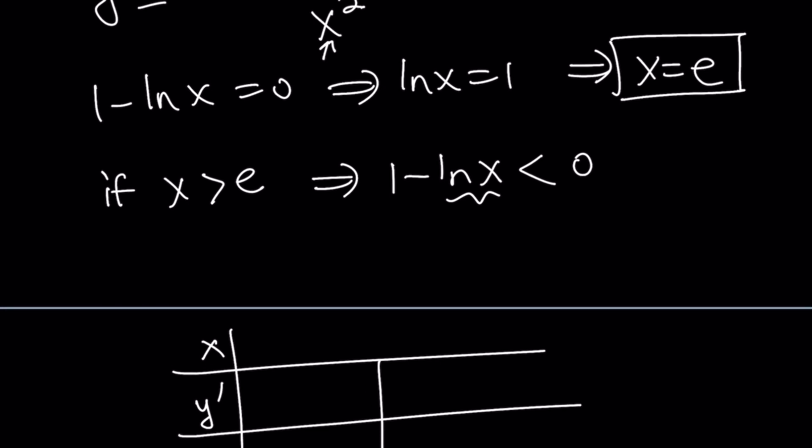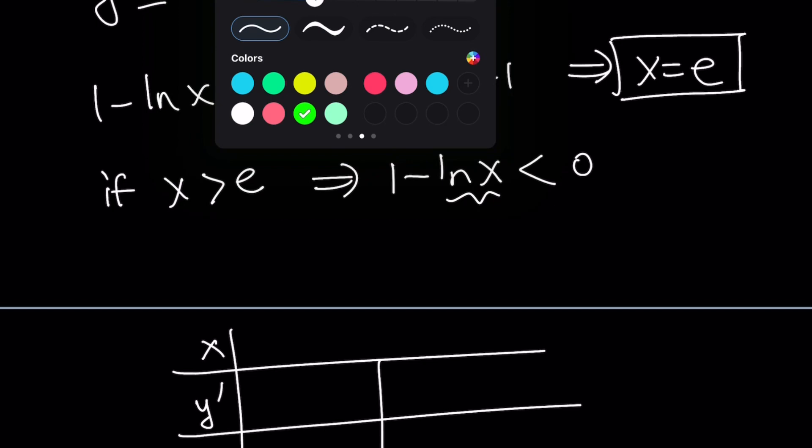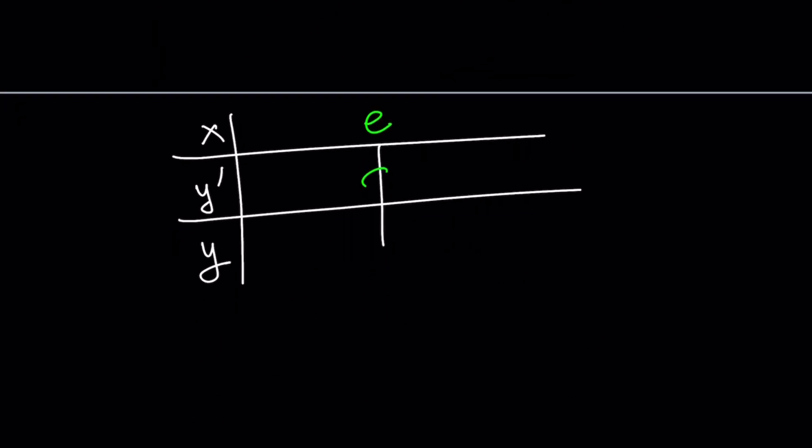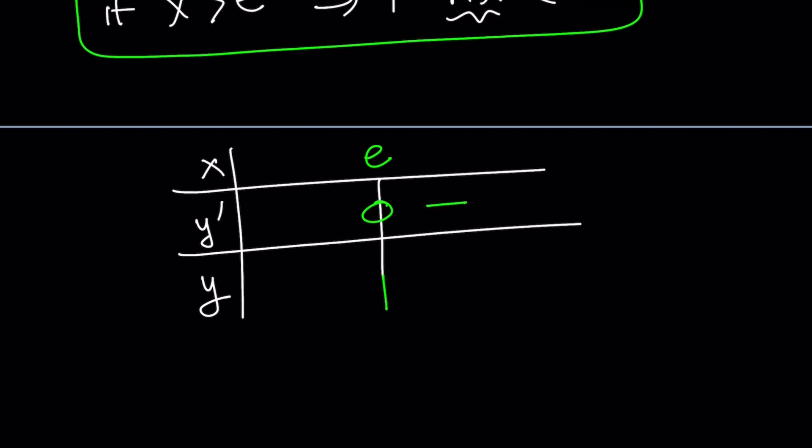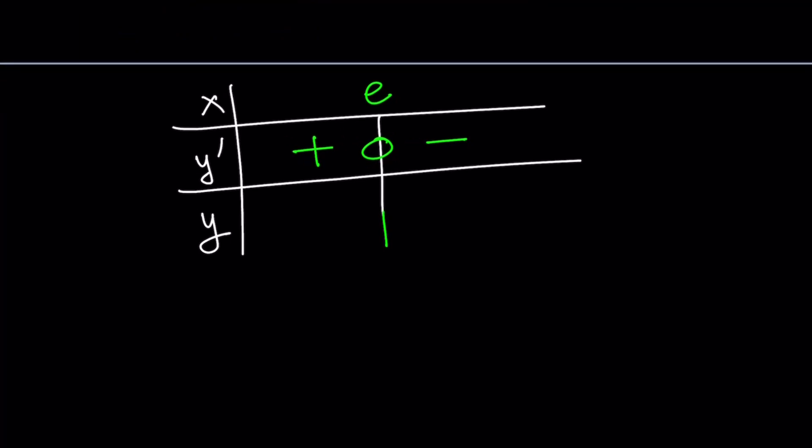From here, we can make a table. And on our table, we're going to have three rows. This is x, this is y prime row, and this is the y row. And here, I'm going to place my critical value, which is x equals e. I'm going to put a 0 there, which means y prime is 0 at x equals e. Now, notice that we found out if x is greater than e, then derivative is negative. So our derivative is going to be negative here and positive here.